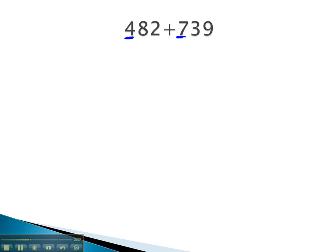The 4 and the 7 are both in the hundreds place, so that'll make it easy to line up 482 plus 739. This time, as we add the rightmost digits, 9 plus 2, we get 11.